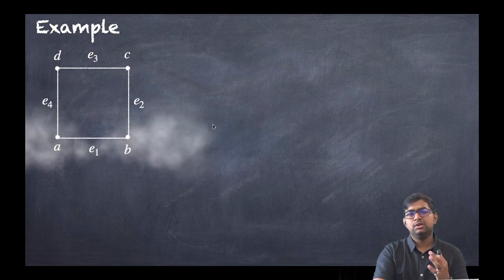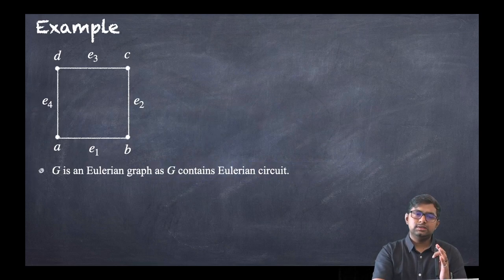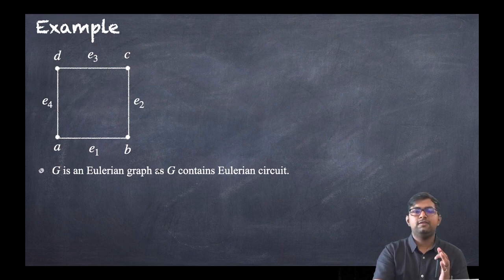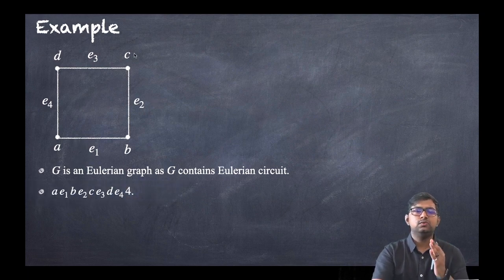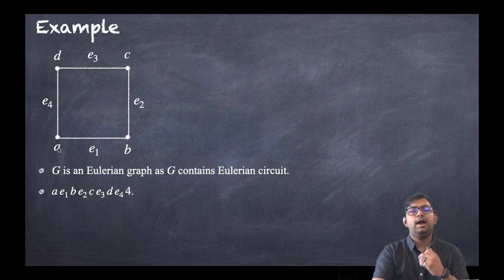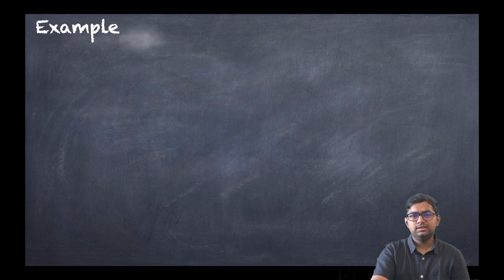Let us discuss an example. This graph is an Eulerian graph as it contains an Eulerian circuit. Starting from vertex A: E1, B, E2, C, E3, D, E4, and back to A. You can see that we have covered all edges exactly once, so it is an Eulerian circuit.